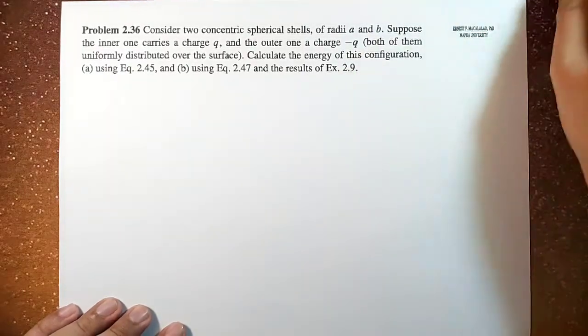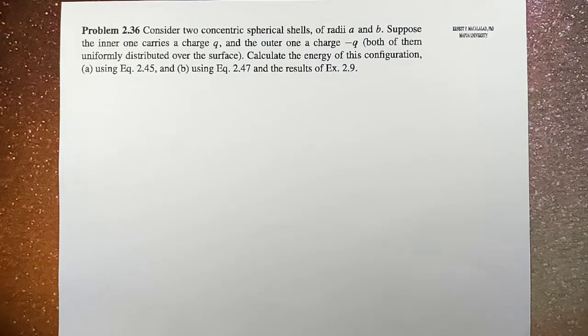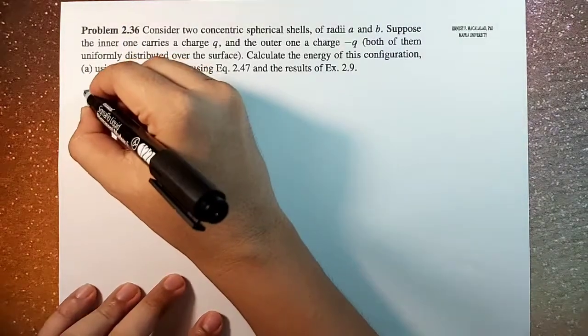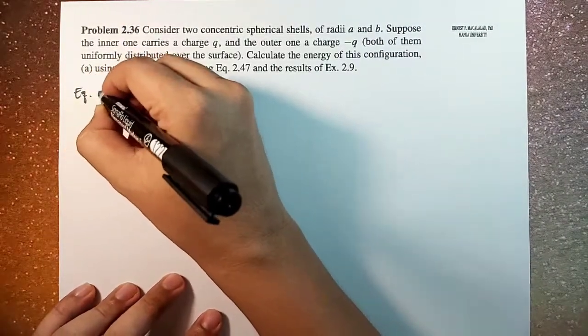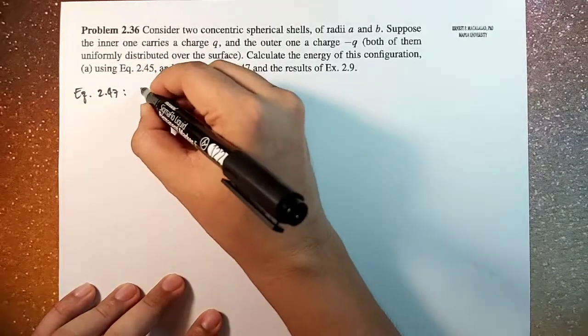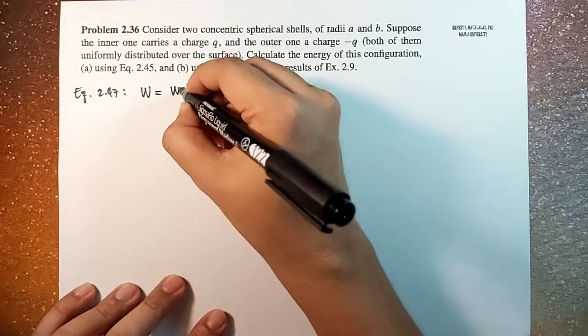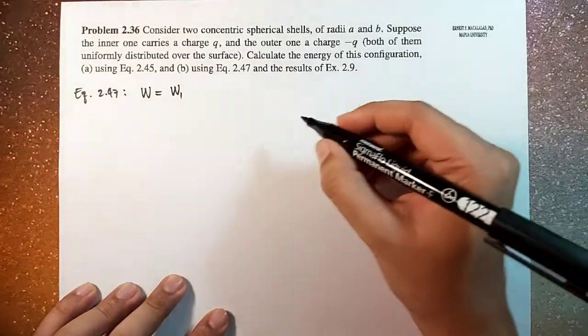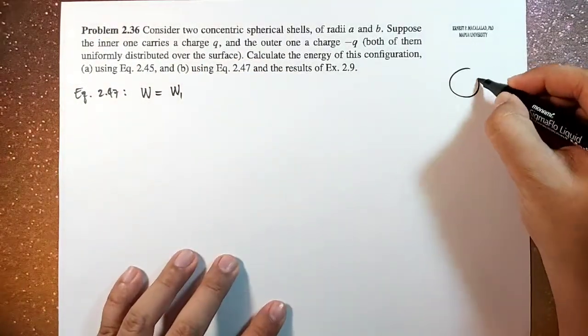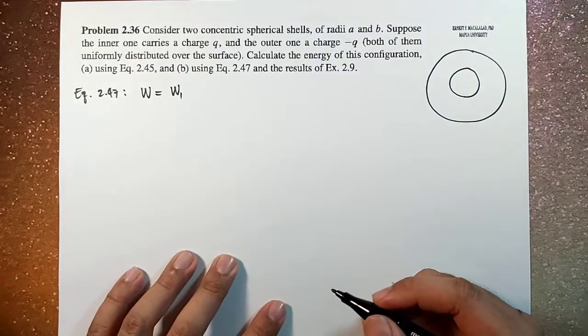Okay, so for equation 2.47, equation 2.47 is given by the total energy is equal to the energy W1. So that's the energy, because remember we have two charged shells.